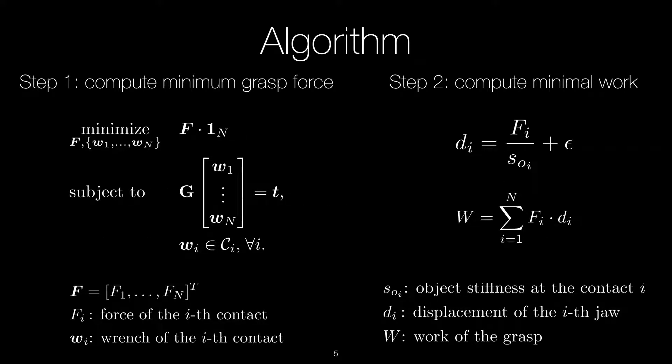The algorithm computes the minimal work quality metric in two steps. We first compute the minimum required grasp force to resist a target wrench for a manipulation task by solving a linear program.